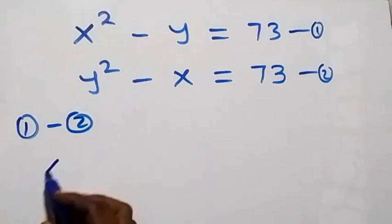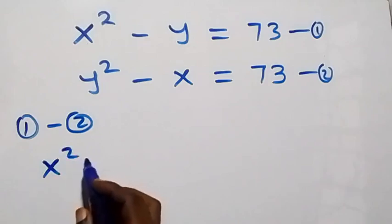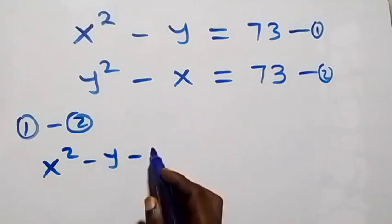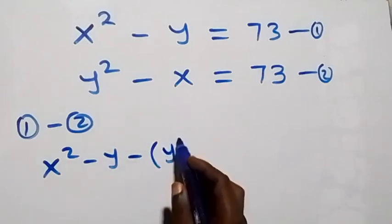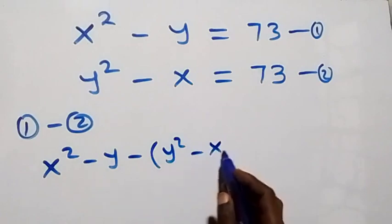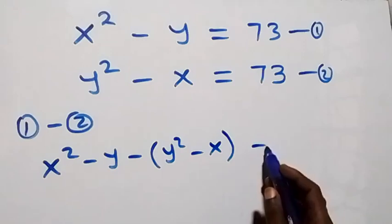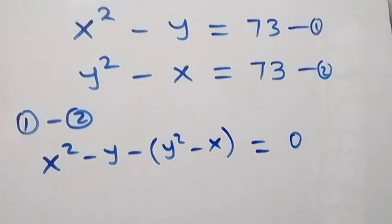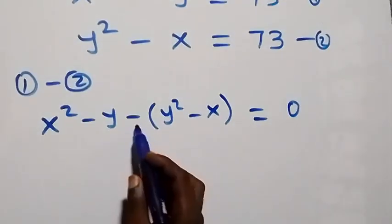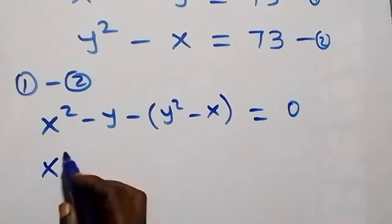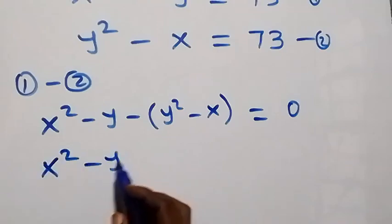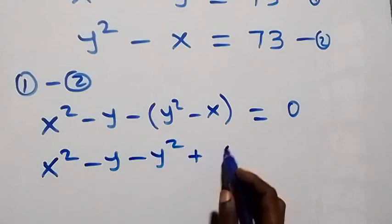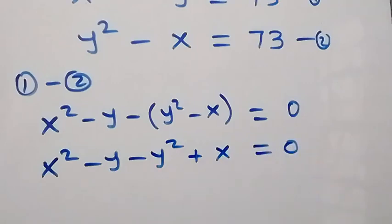What we have in equation 1 on the left-hand side is x squared minus y, then minus the left-hand side of equation 2, that is y squared minus x, in brackets. That equals 73 minus 73, which is 0. Then, using minus to open this bracket, this becomes x squared minus y minus y squared plus x equals to 0.